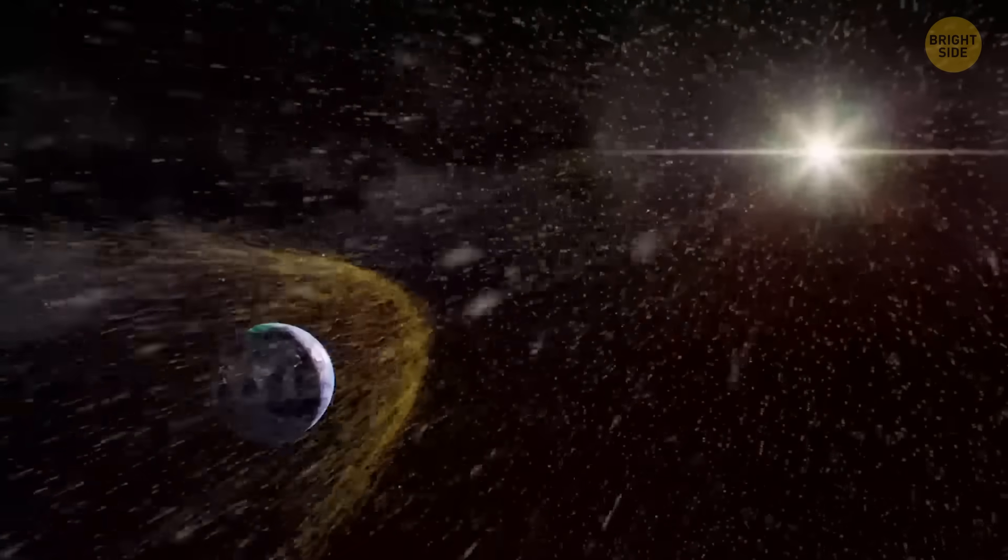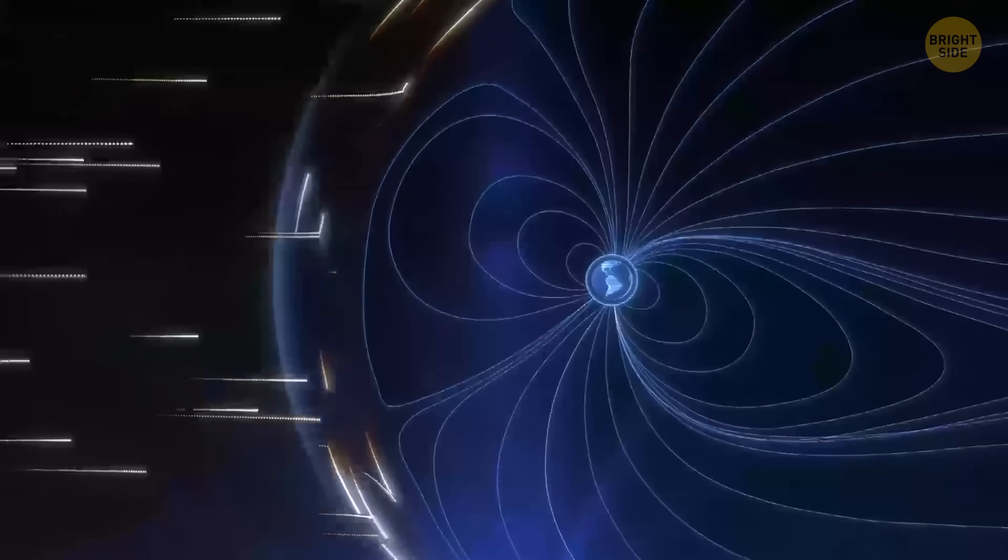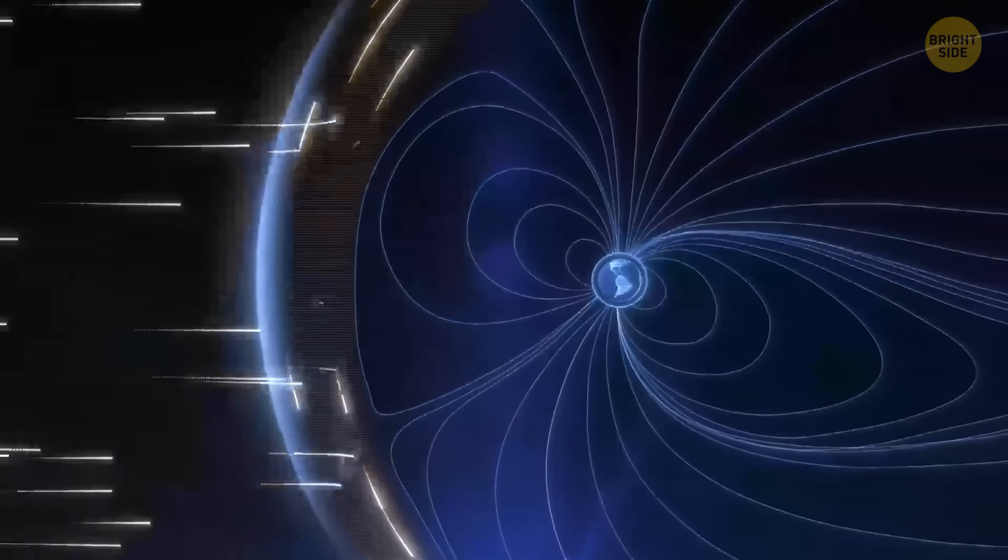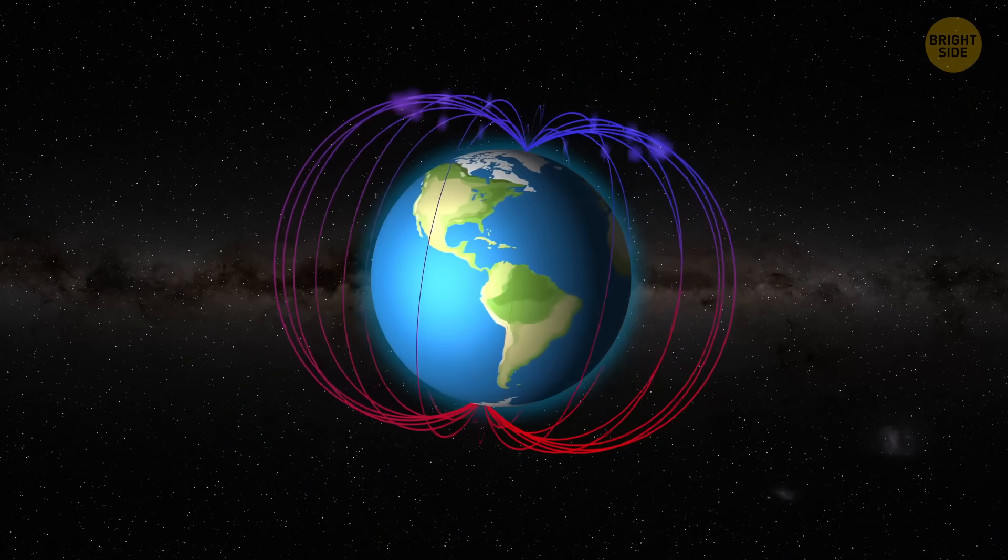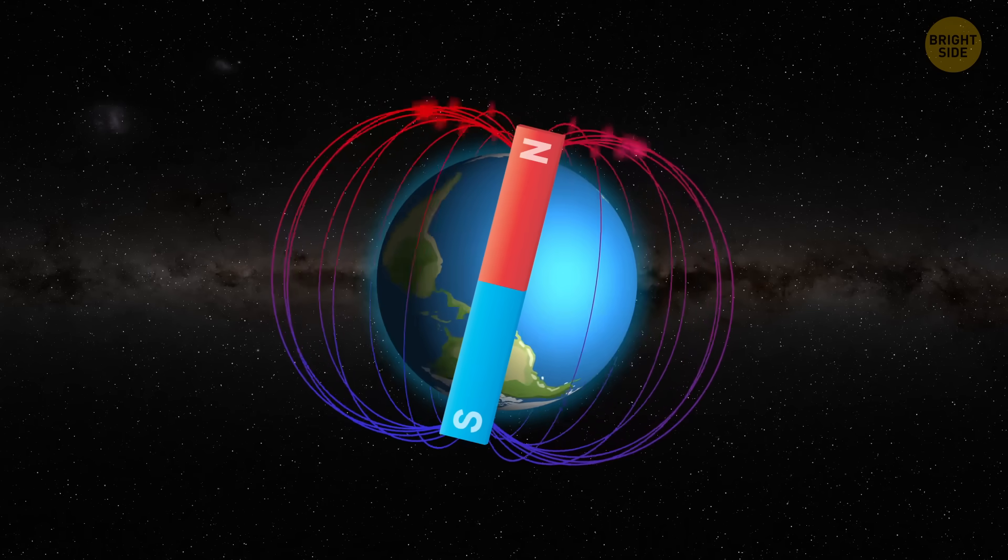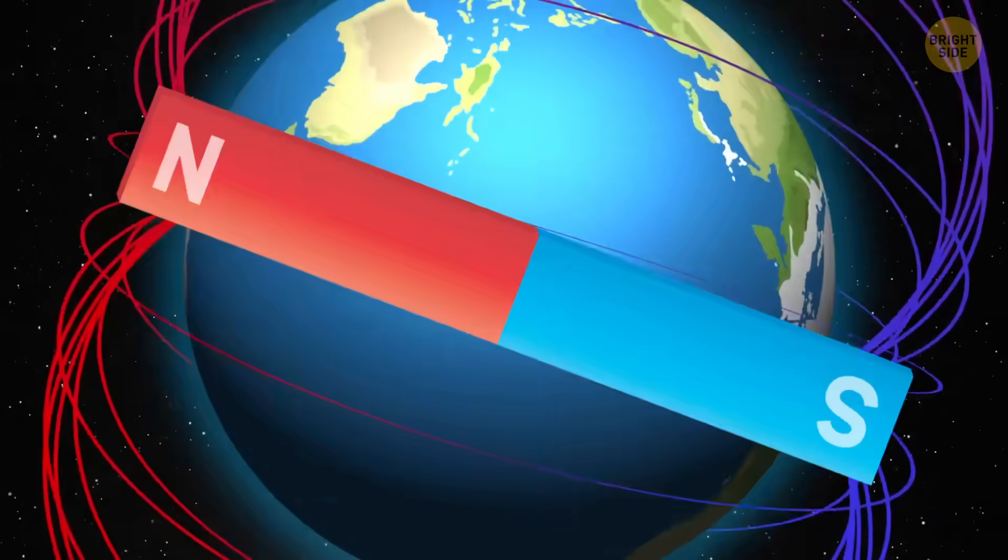The thing is, Earth's magnetic field protects us from dangerous radiation from space, powerful solar winds, and wild swings in temperature, and keeps our atmosphere in check. But over millions of years, the magnetic poles have flipped. When it happens, north becomes south, south becomes north.